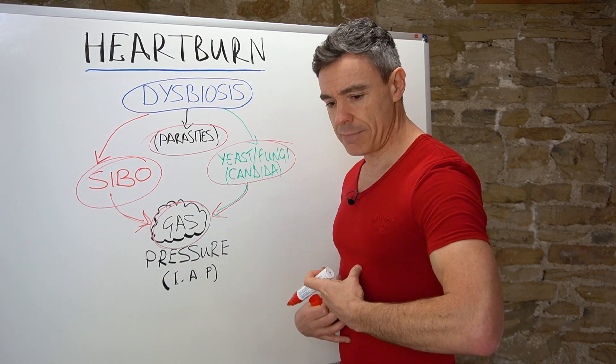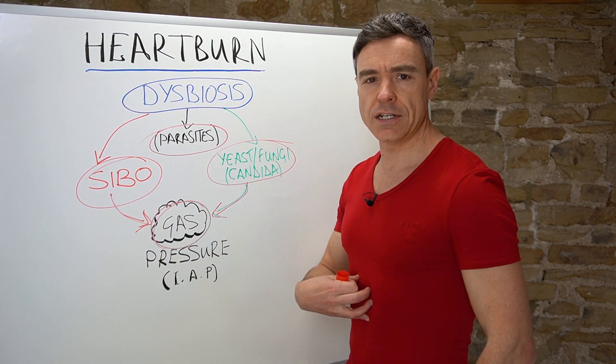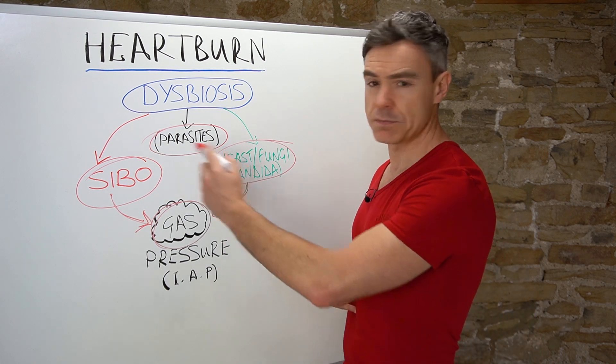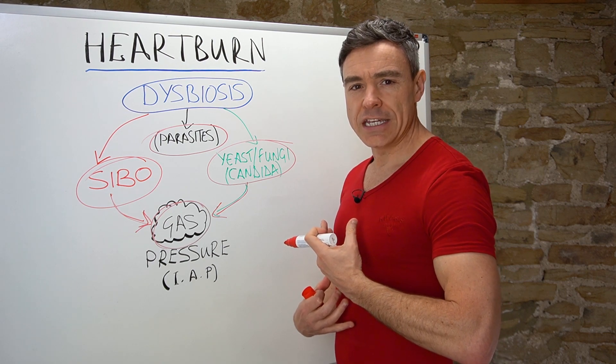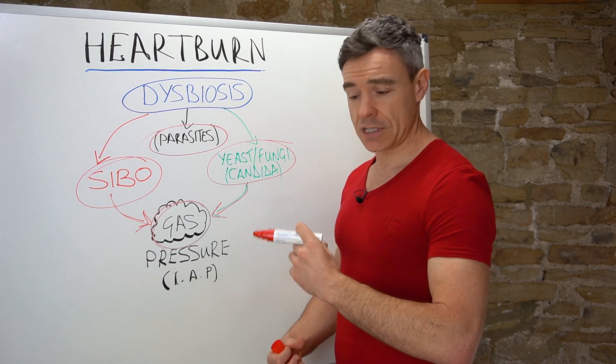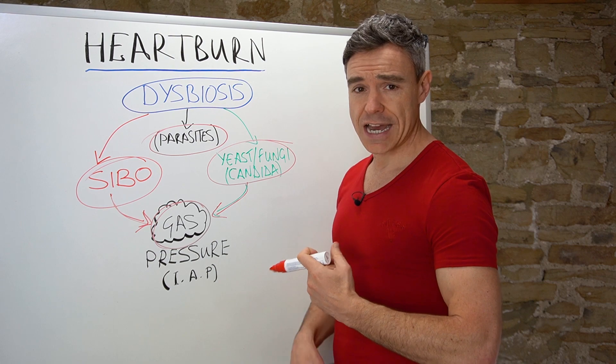If you can imagine putting a balloon in your small intestine where these bugs are overgrowing and then you inflate the balloon, the pressure increases in all directions—it goes forwards, it goes backwards, it goes down, and it goes up.